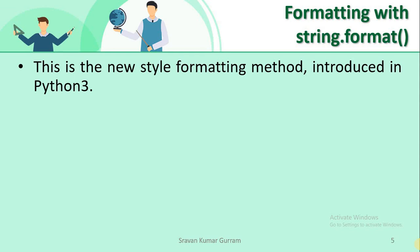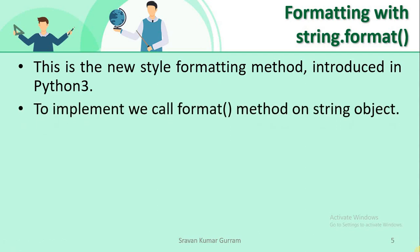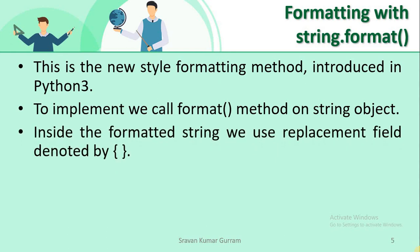Let us start with the string dot format method. This is the new style formatting method introduced in Python version 3. To implement this method, we need to call the format method on the string object. Inside the formatted string, we use a replacement field, denoted by curly braces.